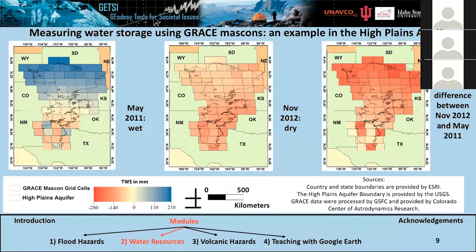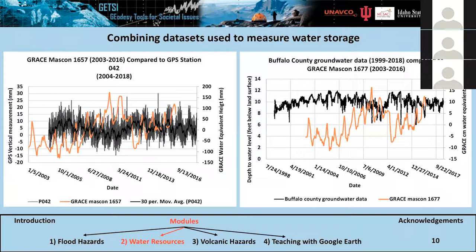The data were also formatted to be put into Google Earth for greater accessibility. Water data from the USGS groundwater dataset and GPS vertical data were combined with GRACE. Here are examples of graphs prepared for students: the orange line shows GRACE total water storage in millimeters on the right axis, while the left axes show GPS vertical motion and water table depth respectively — tools for students to analyze water availability.